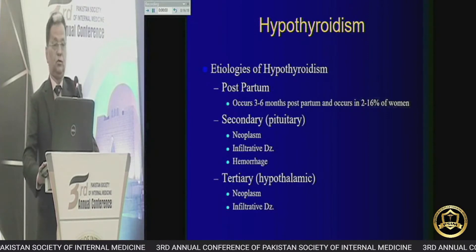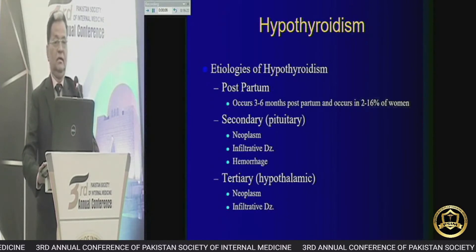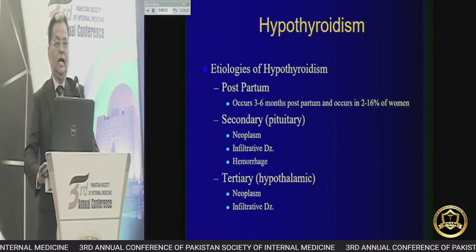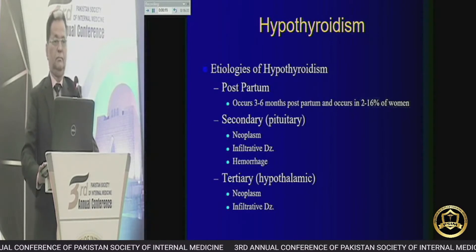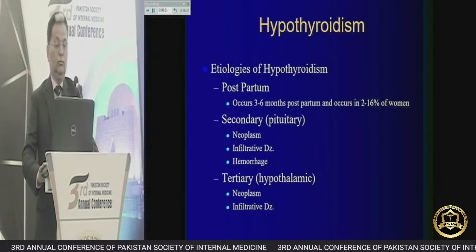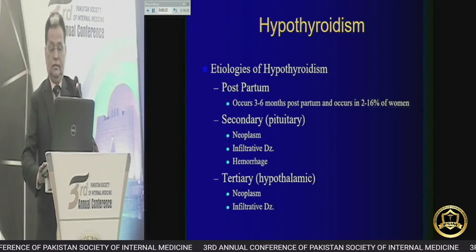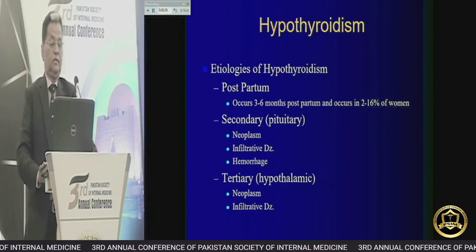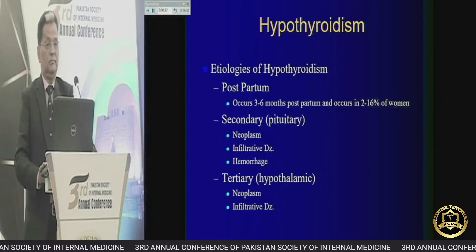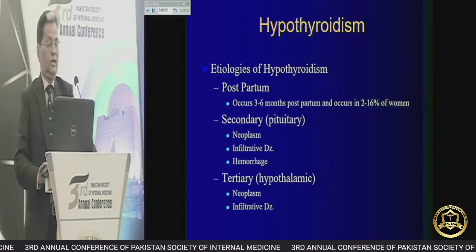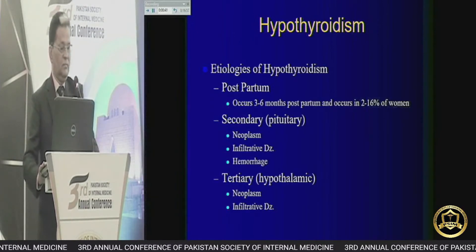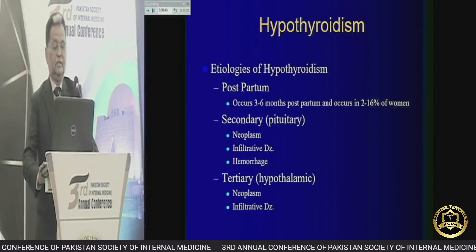Now, talking about hypothyroidism — this is the most common disorder associated with pregnancy. In our study, hypothyroidism is causing more problems in menstrual disorders and other pregnancy-related morbidity. The postpartum state is the most common cause of hypothyroidism. Secondly, neoplasm of the pituitary or pituitary hemorrhage — for example, Sheehan syndrome — may lead to hypothyroidism. Tertiary hypothyroidism due to neoplasms is very rare.